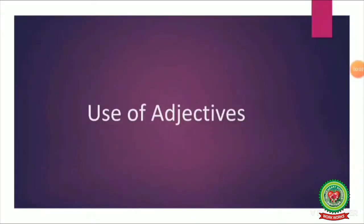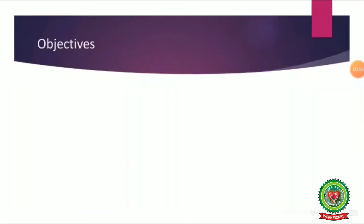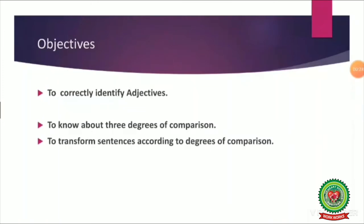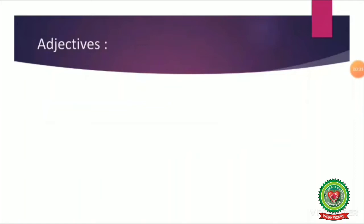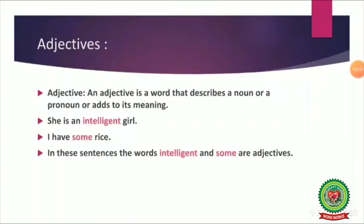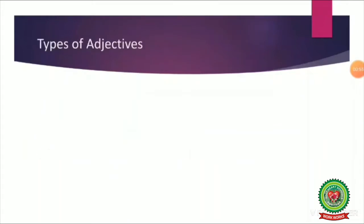Students, today our topic is use of adjectives. The objectives of learning this chapter are to correctly identify adjectives, to know about three degrees of comparison, and most importantly to transform sentences according to the degrees of comparison. An adjective is a word that describes a noun or a pronoun or adds to its meaning. They are also known as describing words. For example: 'She is an intelligent girl' — here 'intelligent' and 'some' are adjectives.